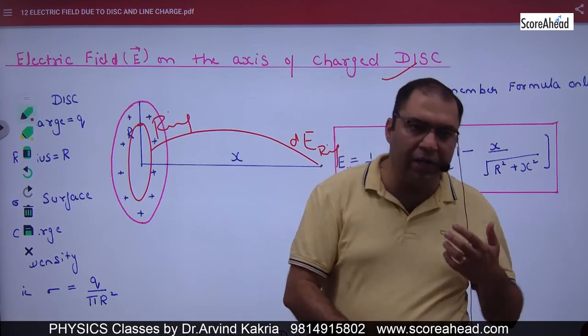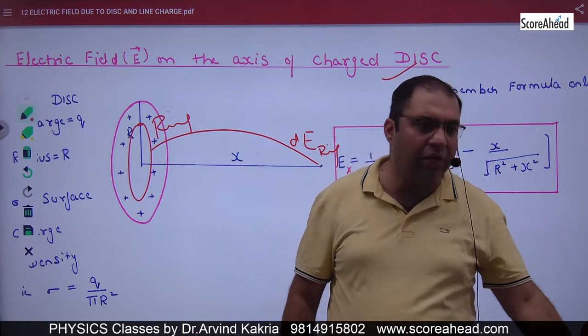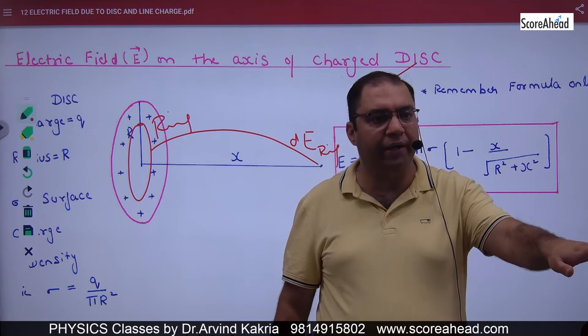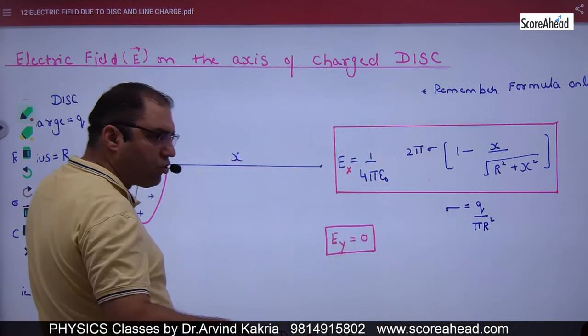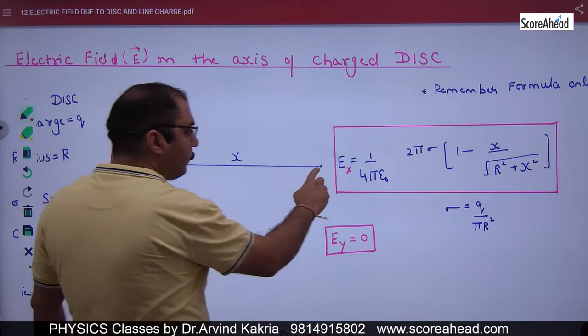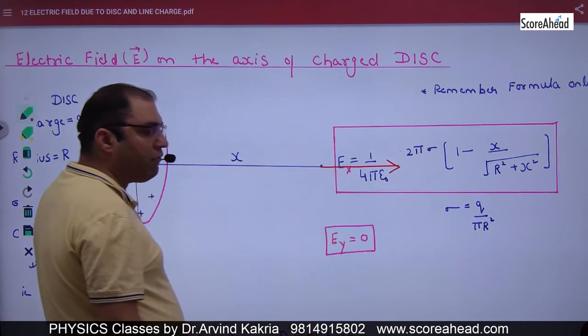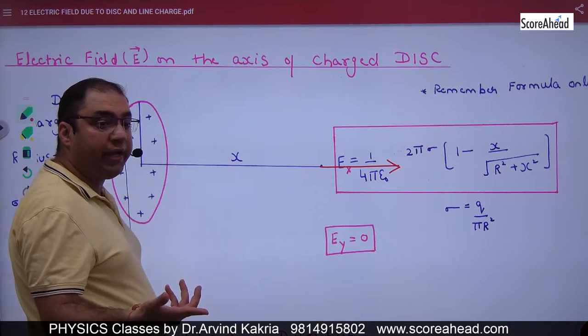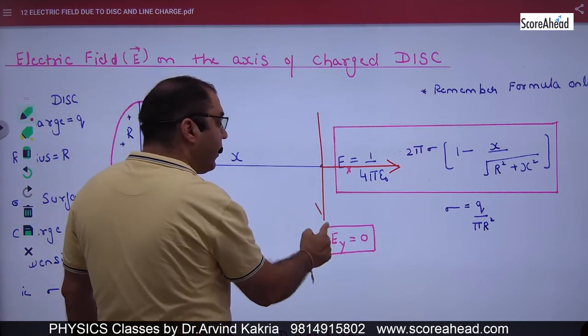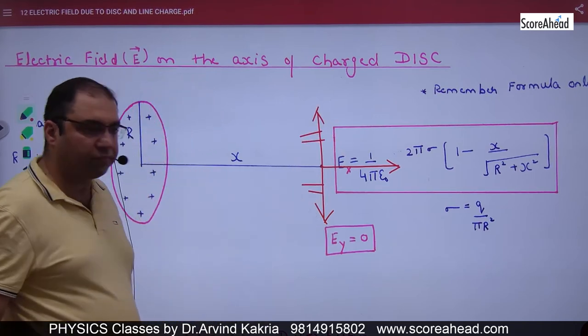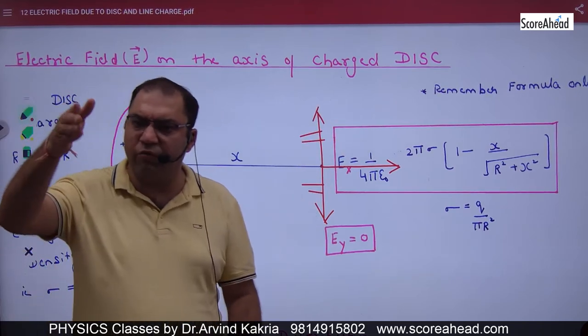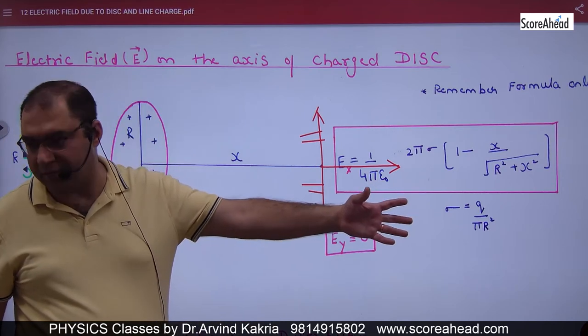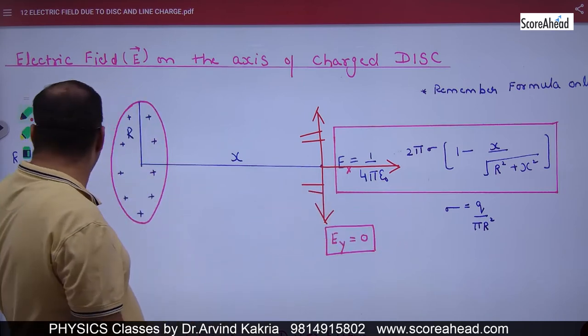We will do it: ring, ring charge, ring, ring, ring E, integrate. So our formula, if we integrate, then the formula. The net electric field will come along x-axis. Y-axis will not come, because all the y-components cancel. Because y-axis E sin theta, and sin theta ring cancel. So we put all the components along the axis.